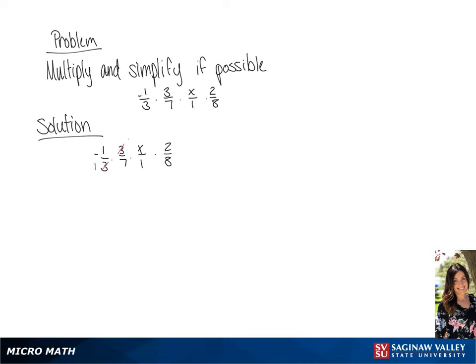We can simplify the 3 in the numerator and 3 in the denominator. Then we can simplify 2 eighths to 1 fourth. So we have negative 1 over 1, times 1 over 7, times x over 1, times 1 over 4.